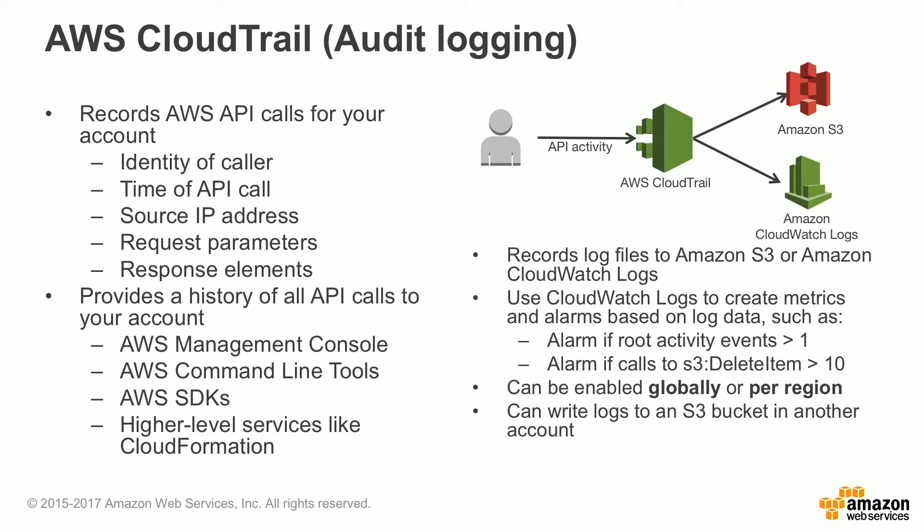It also gives you a history of all API calls for your account, whether they're generated by the AWS Management Console, the AWS Command Line Tools, the AWS SDKs, or higher level services such as CloudFormation. The log files for AWS CloudTrail are recorded to S3, or they could also be recorded to Amazon CloudWatch Logs as well.